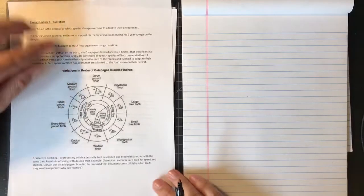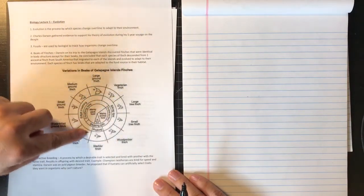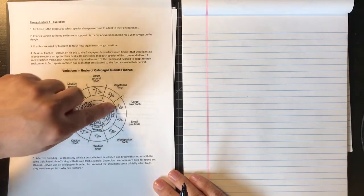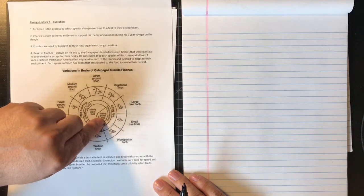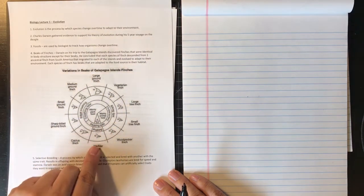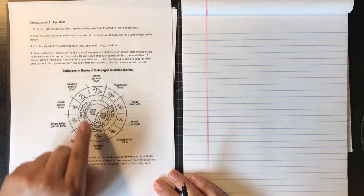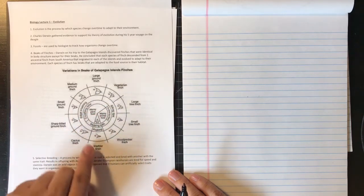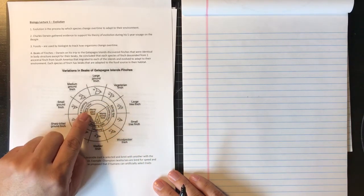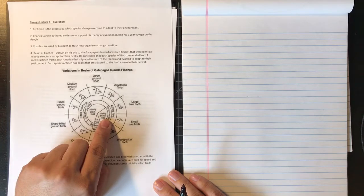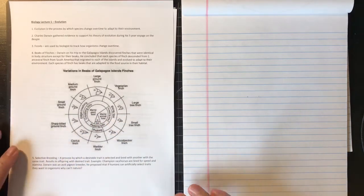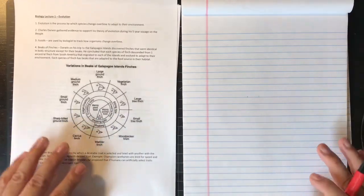So these are your finches that only eat plant-based food, these are your finches that eat animal-based foods, and you have one finch right here, the warbler finch, which actually could do both. It could eat plant-based food or animal-based food at the same time.